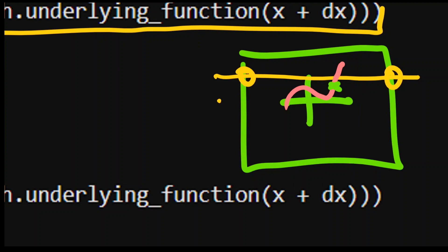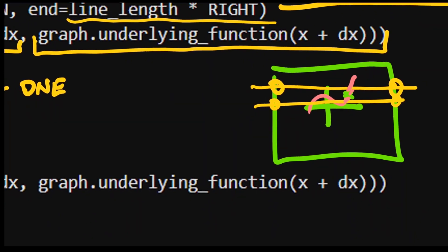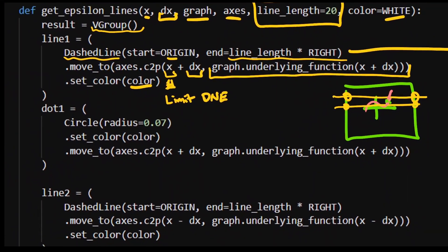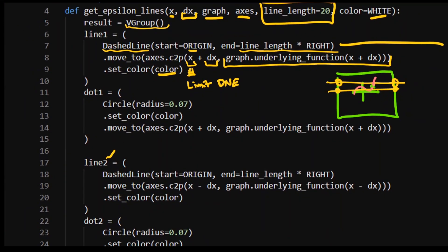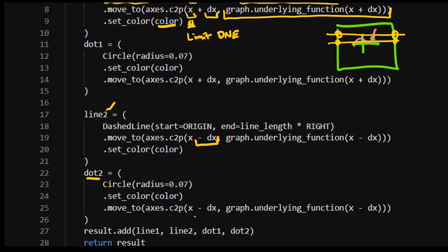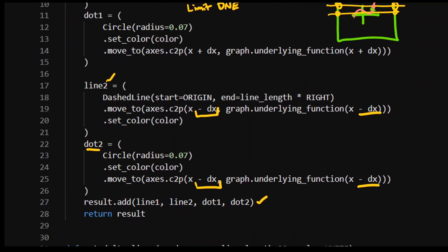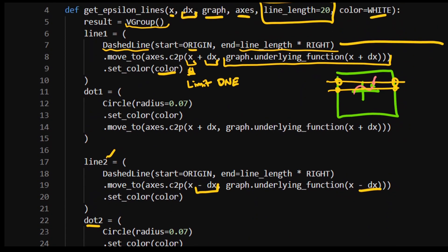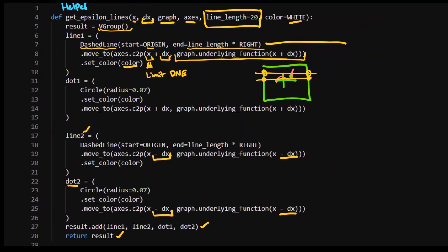We're also going to have one going down below there, right, where it is a distance of dx away on either side with respect to the output of the function. So that's what we've got here. Line two, same drill, except we subtract dx. Dot two, same drill, except we subtract dx, right? Mainly focusing on the input of the function. And then all that stuff is added to the vector group and we return that. So that is going to give us our epsilon lines.